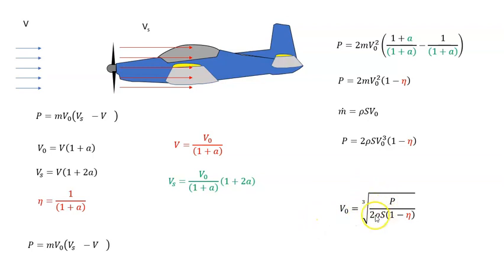is the cube root of P/(2ρS(1 - η)). For that viewer looking to get V₀, if you know the power, you can make an assumption on the efficiency or a range of efficiencies and get a value of V₀. I hope that answers the question.